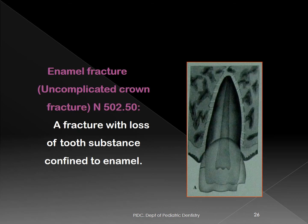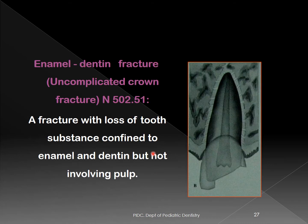Then we have enamel fracture per se, called an uncomplicated crown fracture — uncomplicated because the pulp is not involved. Part of the enamel has fractured. This is classified as uncomplicated crown fracture.